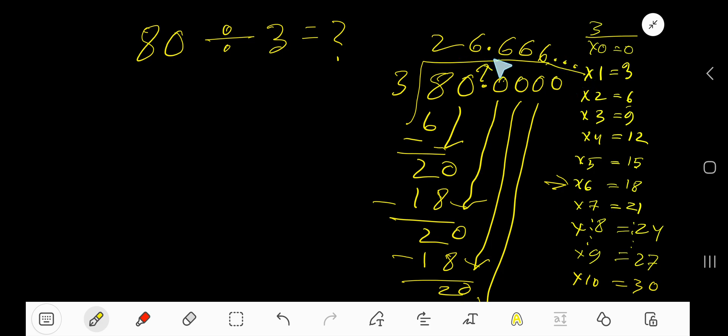So our answer is 26.666 dot dot dot. You can place a bar over 6 to mean that this 6 is repeating. 26.6 bar is our answer.